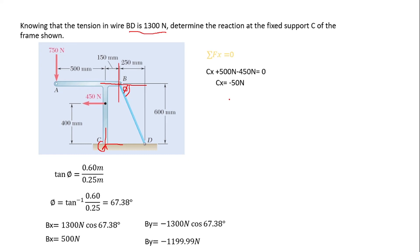Moving on to the sum of forces in the y-component: Cy is positive on the positive y-axis, minus 1199.99 newtons (By, moving in the negative y-axis), minus 750 newtons (force at A, moving in the negative y-component), equals zero. Solving, we get Cy = 1950 newtons.